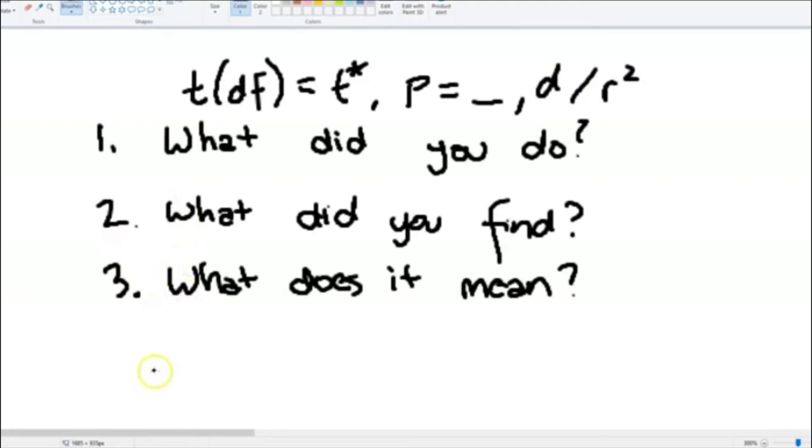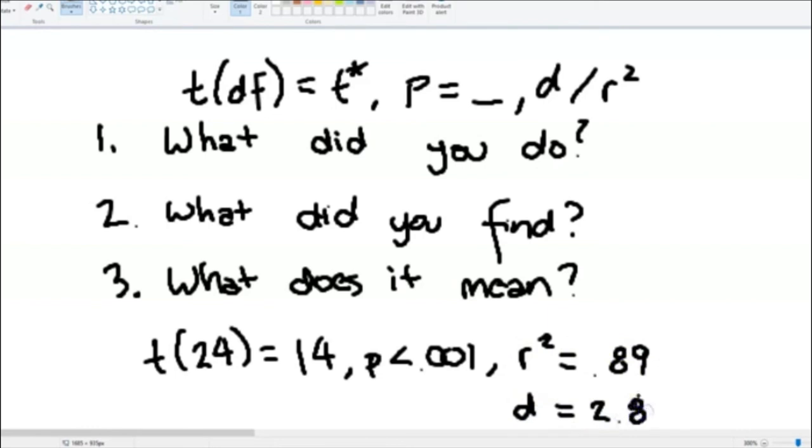If we had the example for our statistics for our previous one, you would have a t, we had 24 degrees of freedom in our example, equals 14, comma, p less than 0.001, comma, r-squared 0.89, or you could have done Cohen's d, which was 2.8. So we would say that this was a statistically significant result because p is far below 0.05 and a large effect. So if we were going to talk about this, first thing we'd want to do is say, what did we do? We would say, in order to determine whether a sample of students was scoring significantly better on their SATs than the state average, a one-sample t-test was performed.